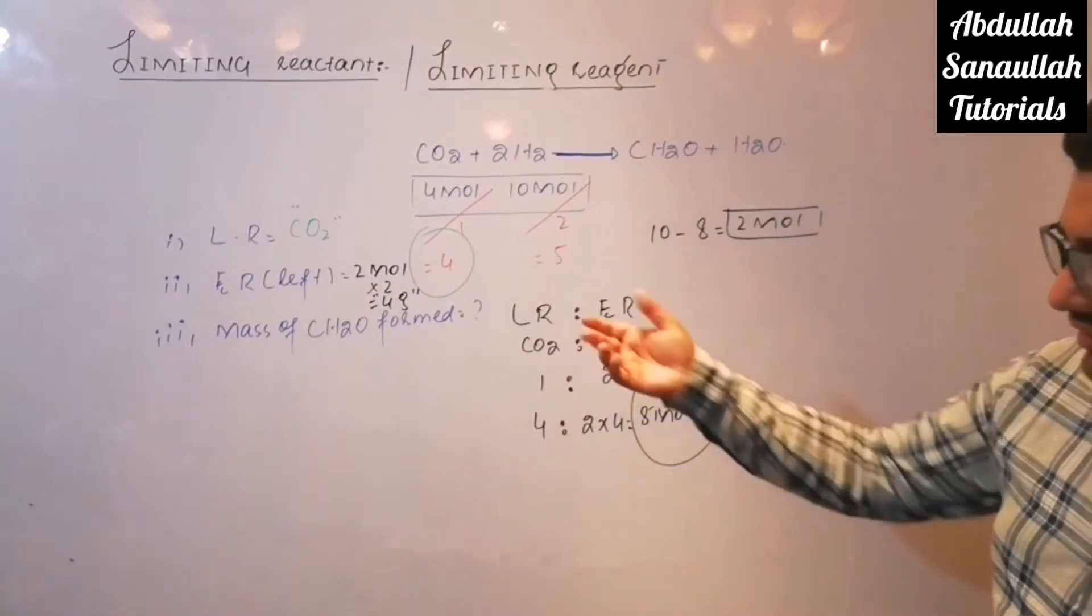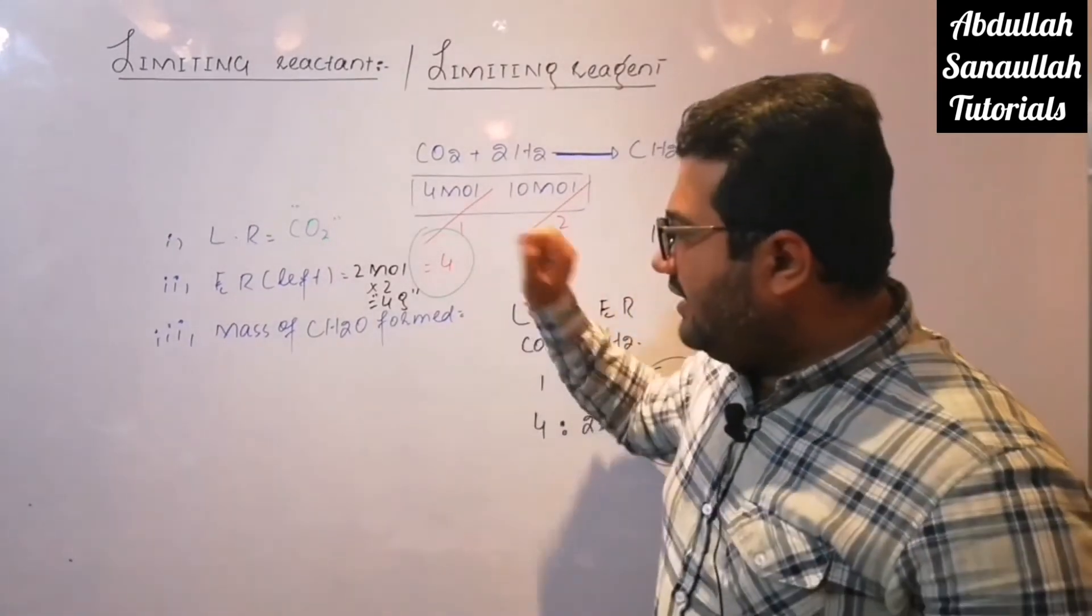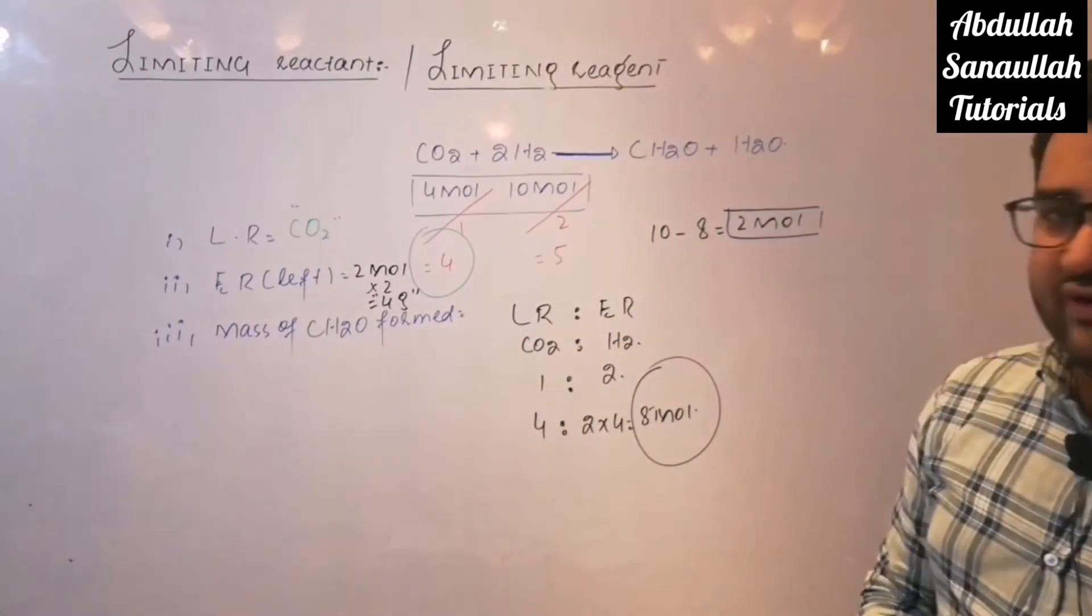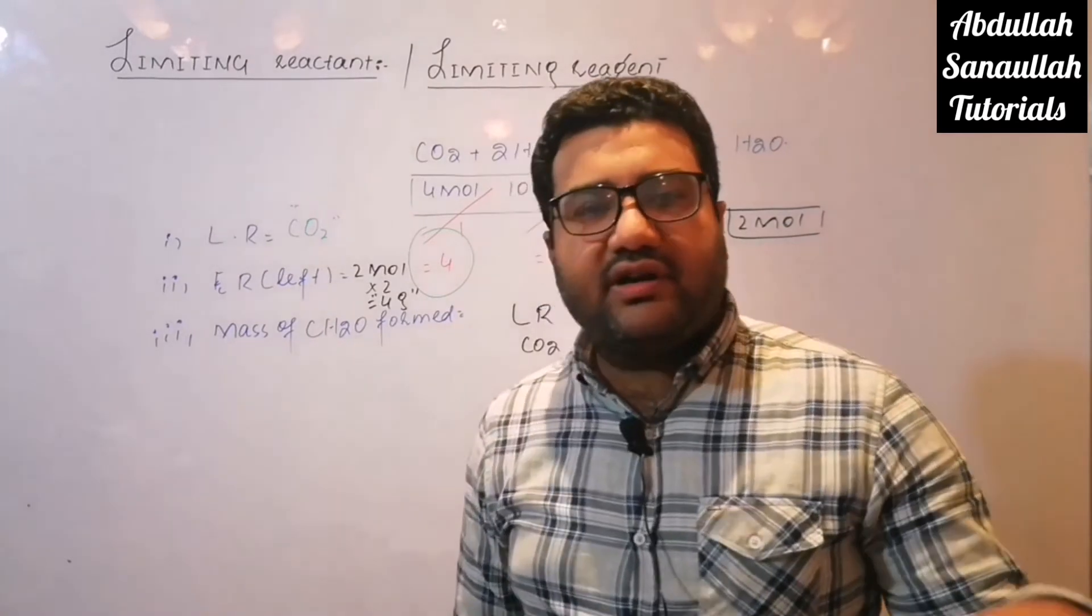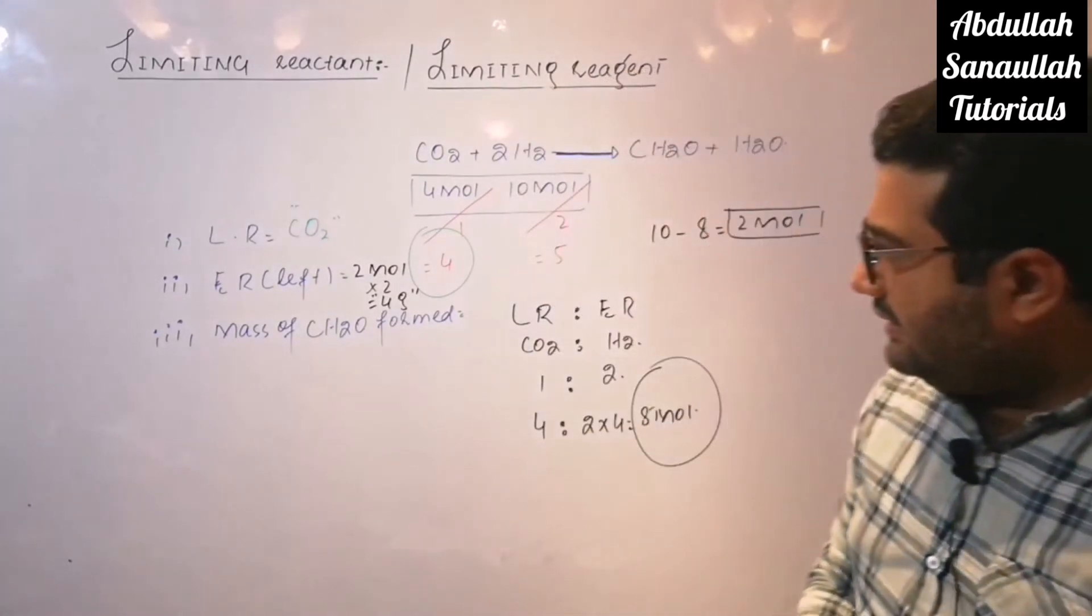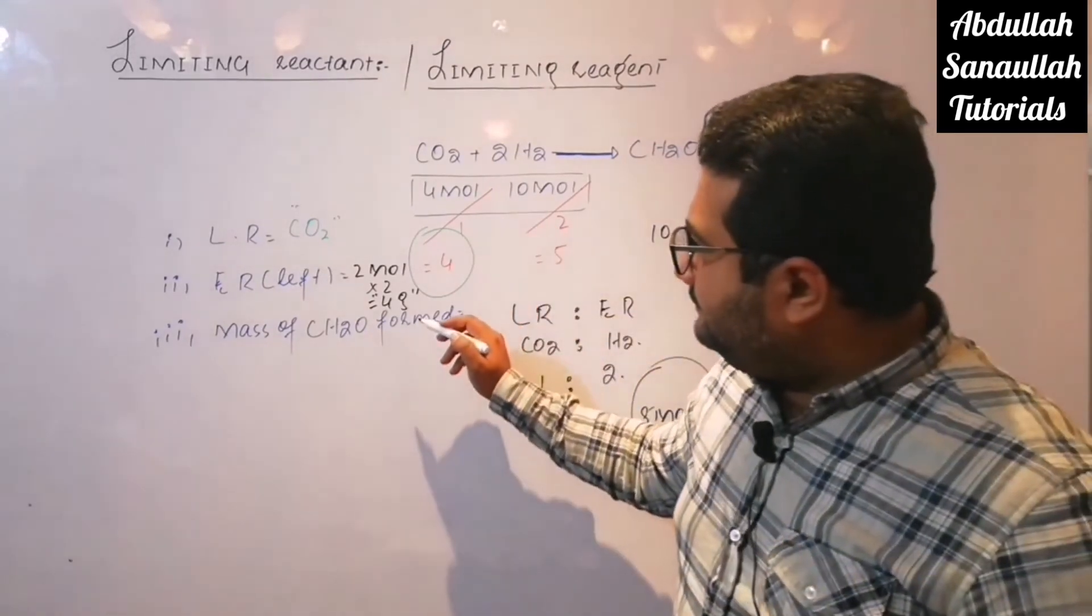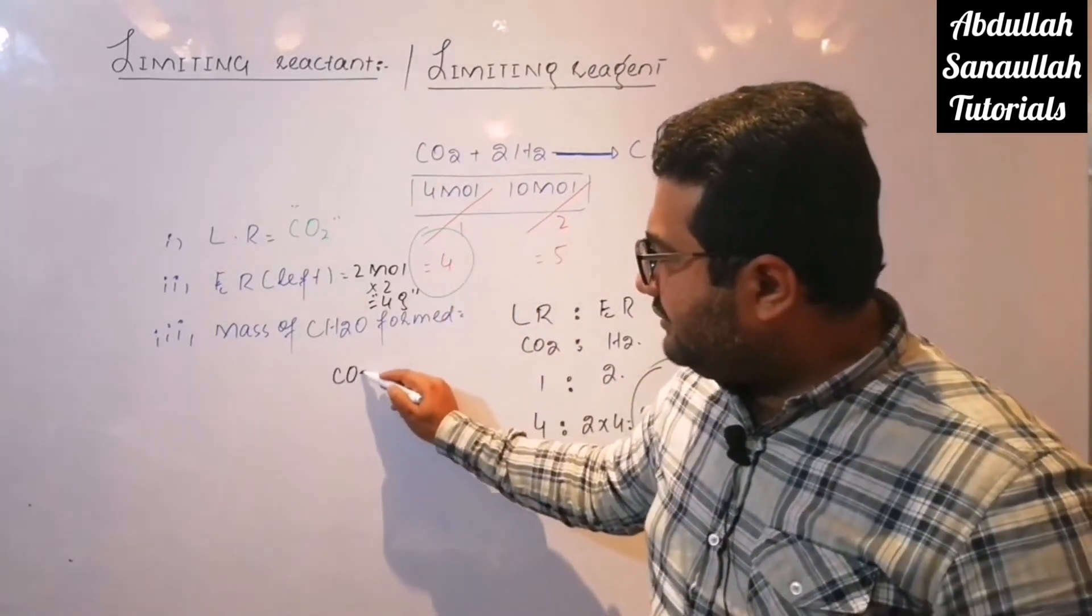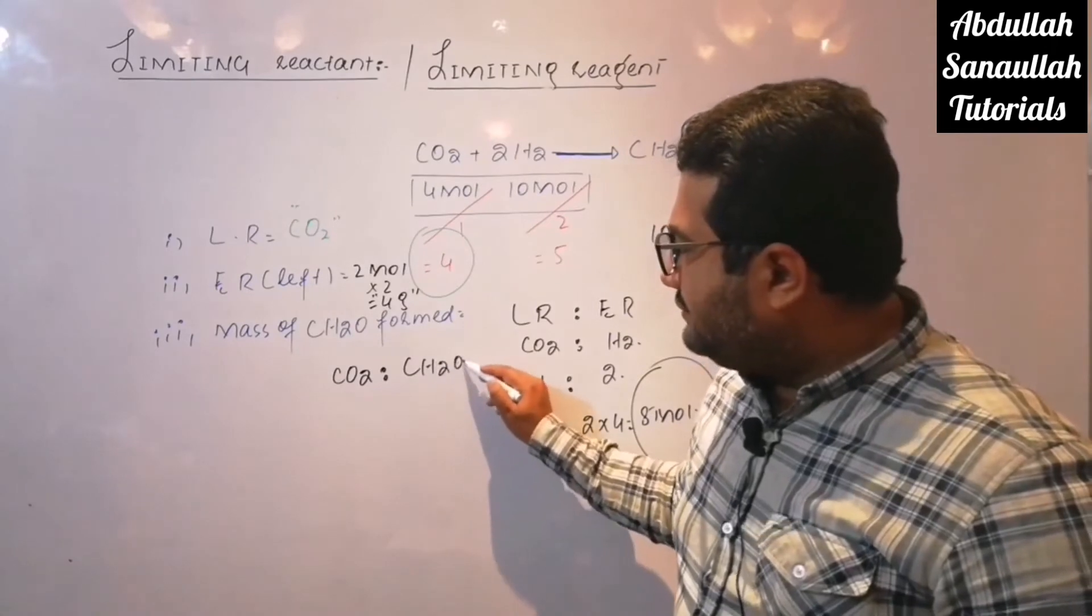Now let's solve the third portion. Mass of formaldehyde formed. Whenever the mass of the product is required, you will compare that product with the limiting reactant. So limiting reactant is CO2 and product is CH2O.